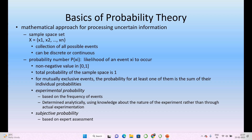In the mathematical approach for processing, we go for probability theory, which can be used to process uncertain information. The sample space is given as x1, x2, and so on to xn — it contains a collection of all possible events. The probability P(xi) can be treated as the likelihood of event xi to occur, and it will be a non-negative value in the interval [0, 1]. The total probability of the sample space is 1. For mutually exclusive events, the probability of at least one of them is the sum of their individual probabilities.